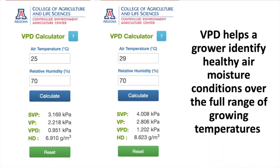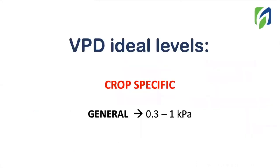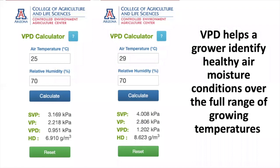But how do you know if VPD levels are correct? We have to mention VPD is very crop-specific and can even change across the crop cycle. The general recommendations are to keep VPD levels from 0.3 to 1 kilopascals. In our example, we can notice same humidity levels but higher temperature can promote higher VPD levels than the recommended ones, providing us information about the necessity to take action inside our system.